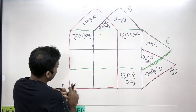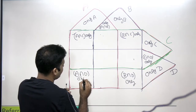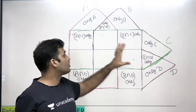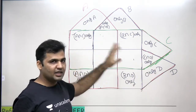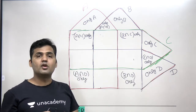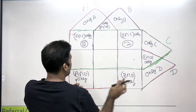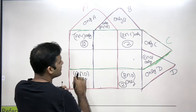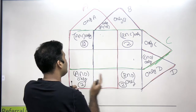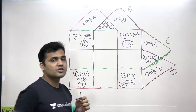This region comes under the area of D and B, so this is B intersection D only. And this corner cell comes under the area of A and D, so this is A intersection D only. You can see that the four corner cells each belong to two sets, and there are two additional two-set regions in the middle, giving six regions total that belong to the intersection of exactly two sets.